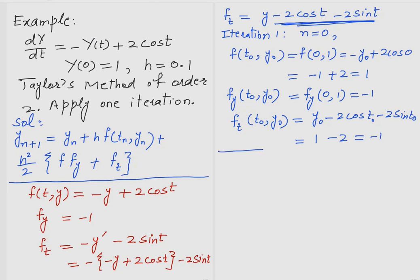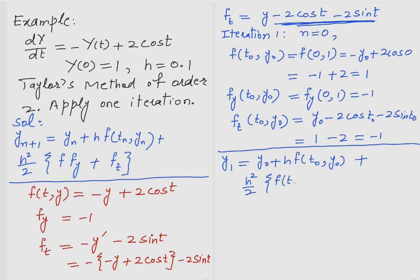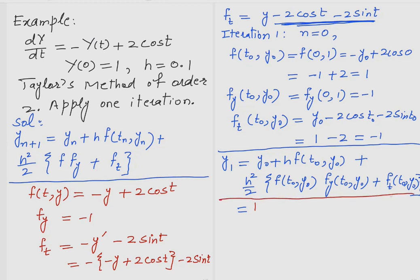Now we plug these values into the Taylor's method formula: y_1 = y_0 + h·f(t_0, y_0) + (h²/2)·f_t(t_0, y_0). We have y_0 = 1, f(t_0,y_0) = 1, and f_t(t_0,y_0) = -1.